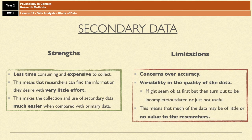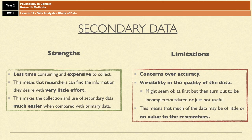A limitation, however, is that secondary data often throws up a lot of concerns over accuracy. That's because there's a lot of variation in the quality of the data being collected. For example, data might seem okay at first but could turn out to be incomplete, outdated, or just not useful, which means a lot of the data may turn out to be of very little or no value to the researchers — which is obviously bad because you've wasted time collecting it.